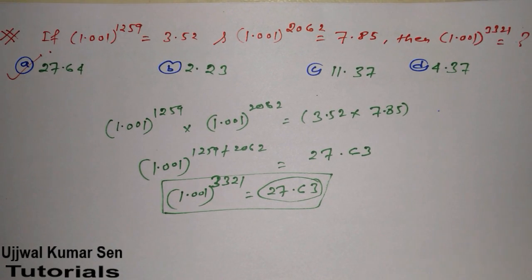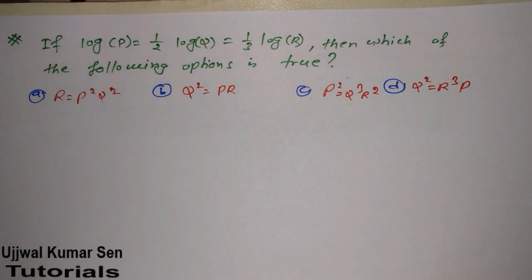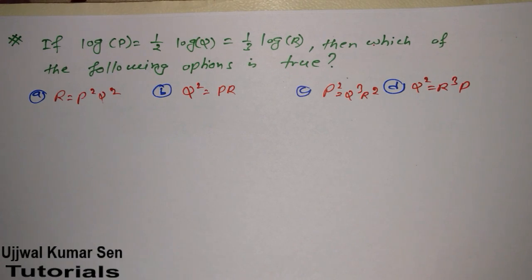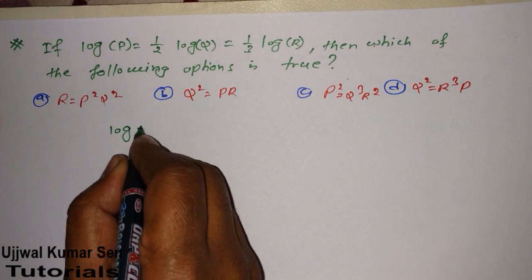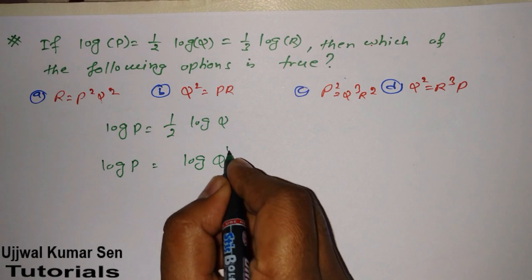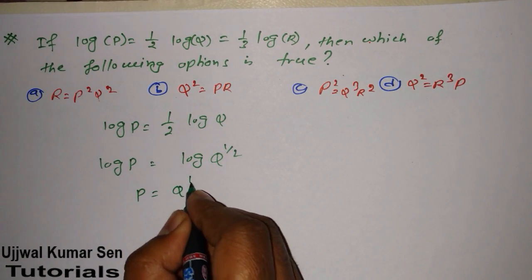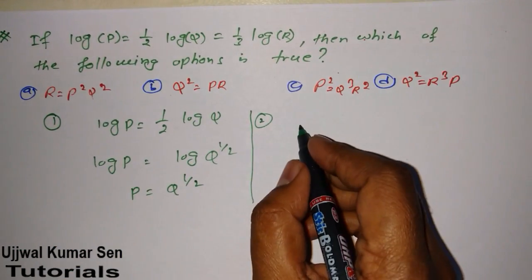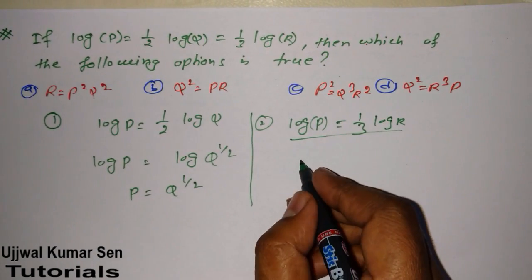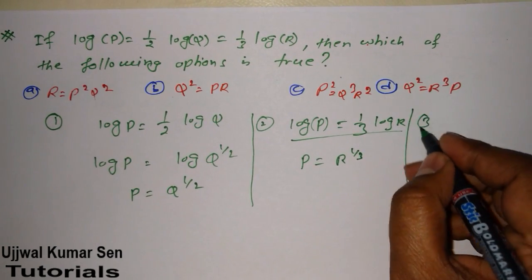Now let's move to the next question — the same type of question requiring no big approach. To solve this, you only need a simple concept of logarithm. If you have a basic understanding of logarithms and natural log, you can solve this problem. First, let me write all the relations: log p = ½ log q, which means log p = log q^(1/2), and log p = ⅓ log r, meaning log p = log r^(1/3).